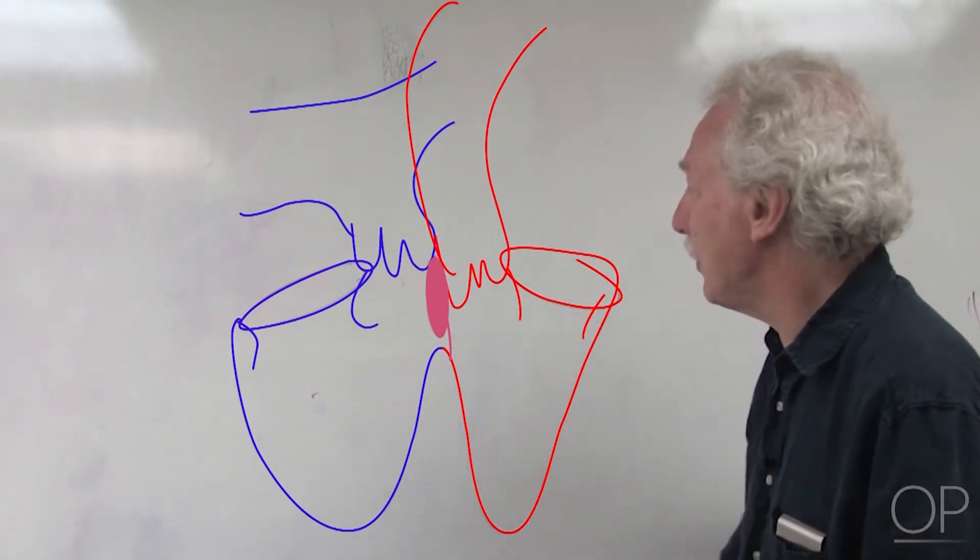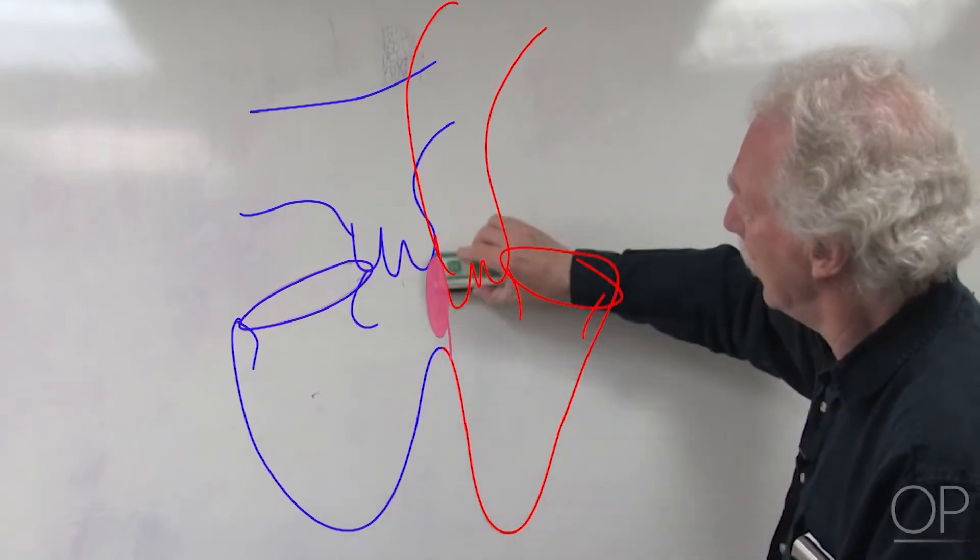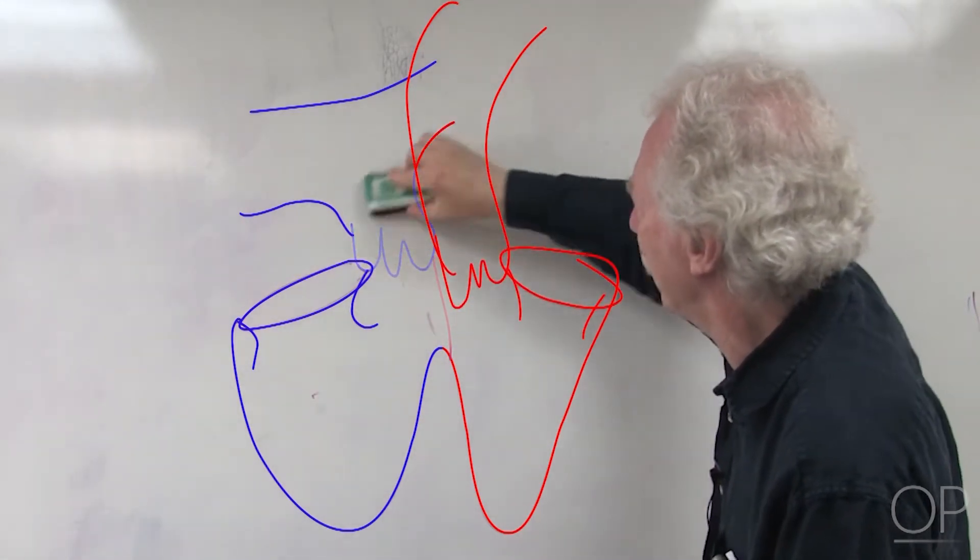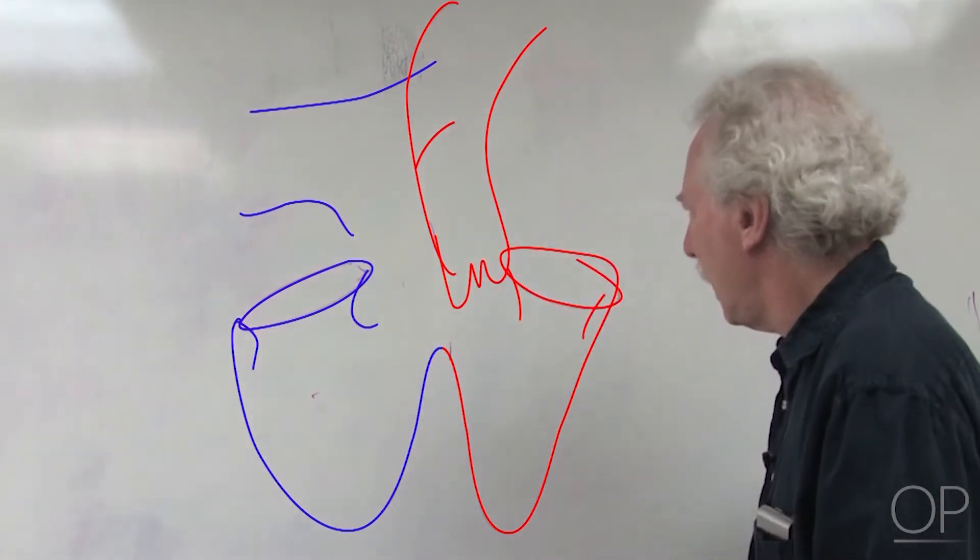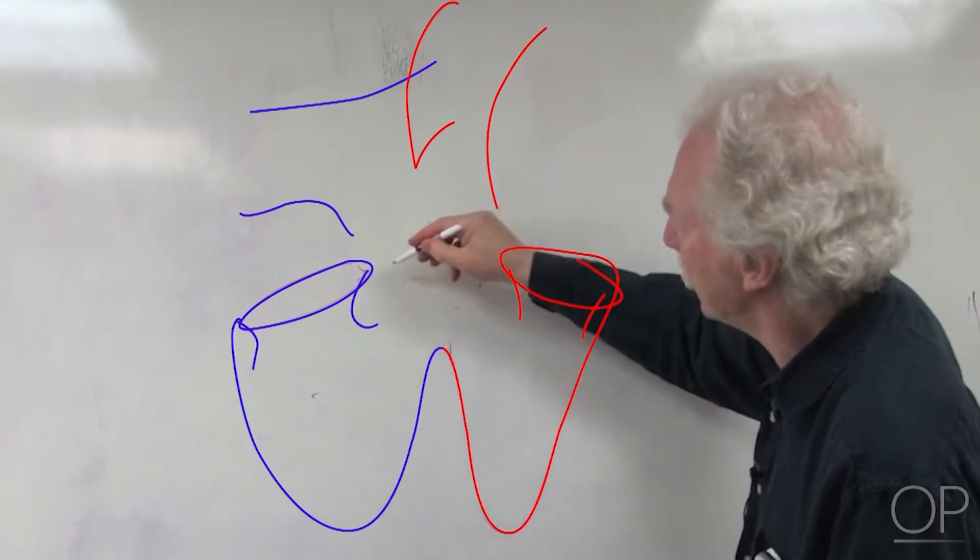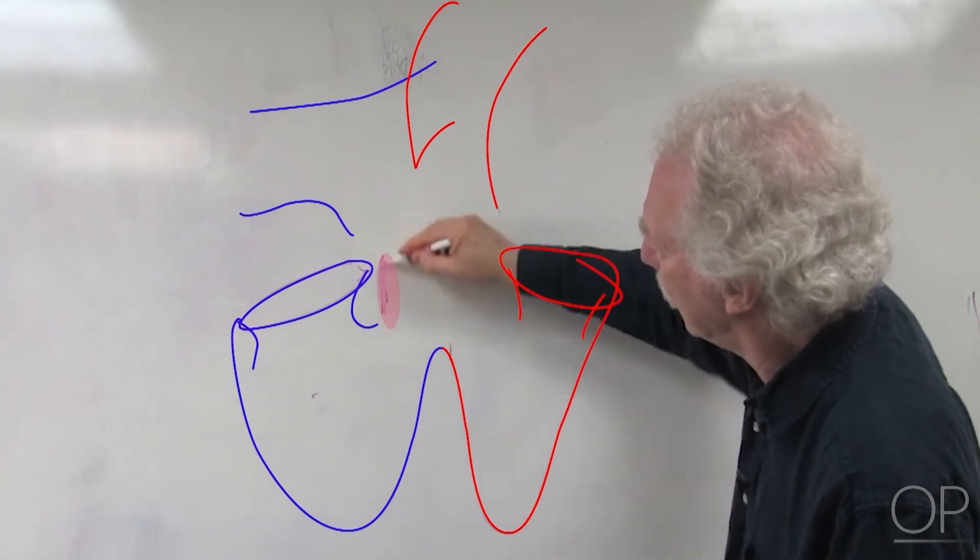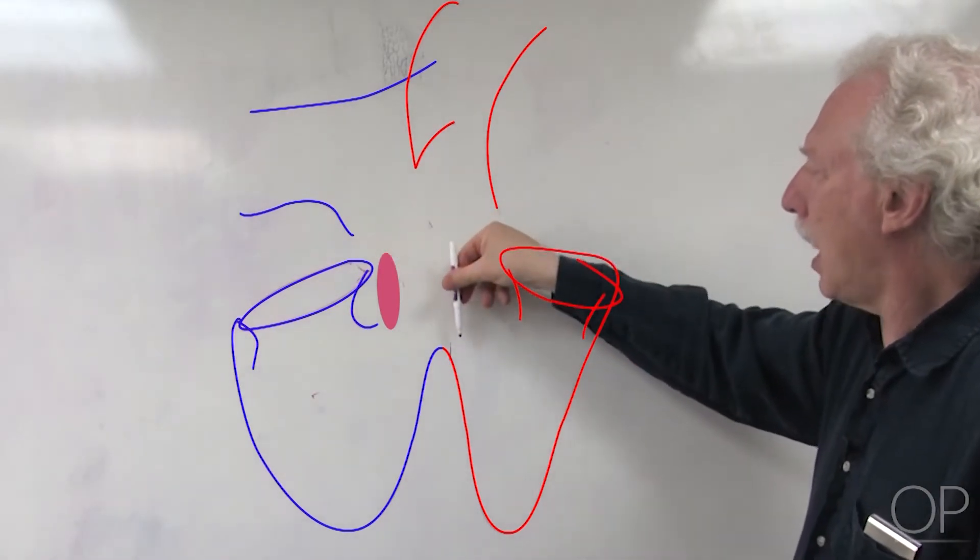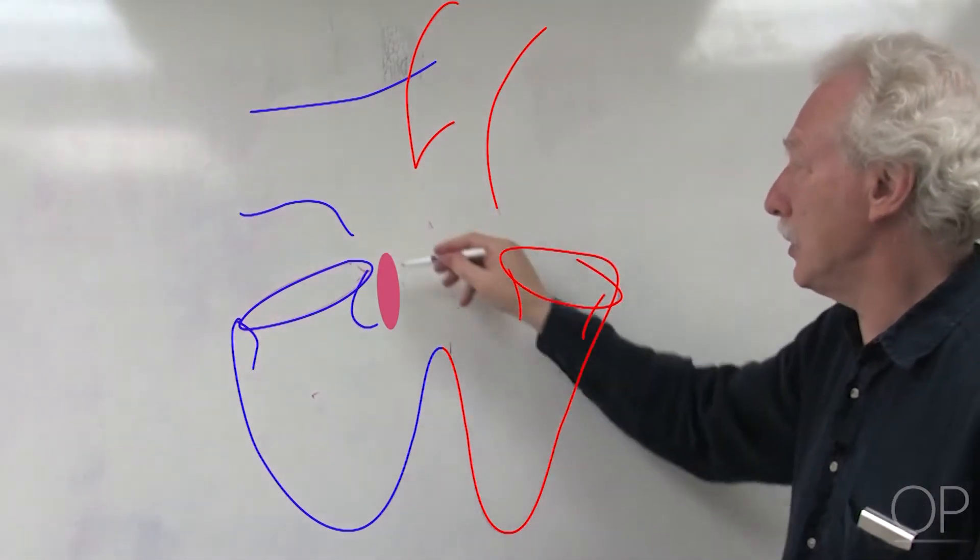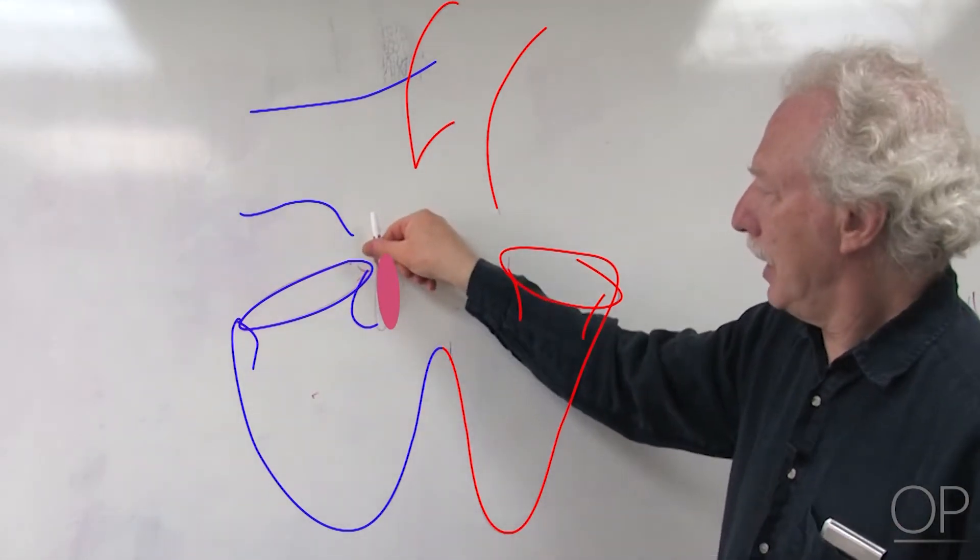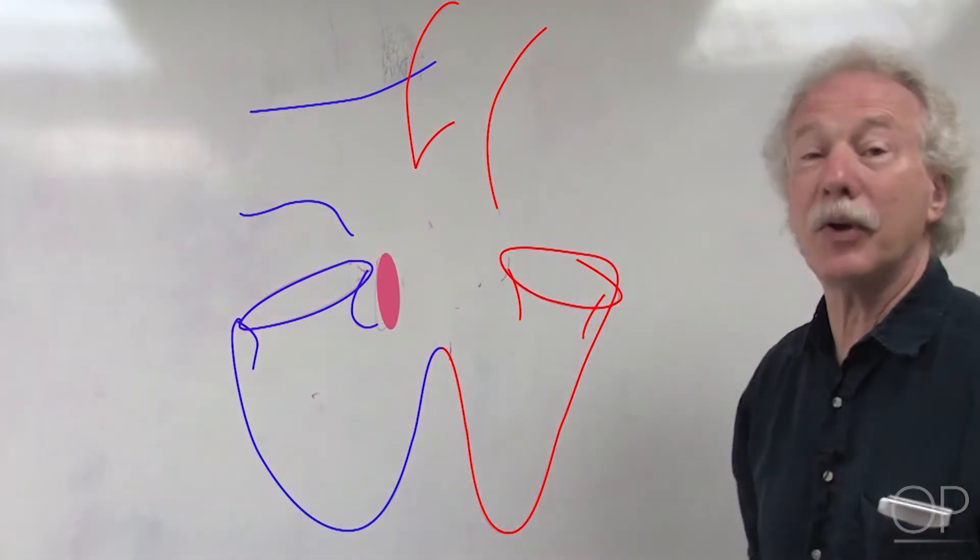The conal septum, instead of coming in here—I'm going to remove the pulmonary artery for a moment and the lower part of the aorta—I'm going to take the conal septum and bring it over here. It is malaligned with the rest of the ventricular septum. This is going to be rightward, anterior, and superior.